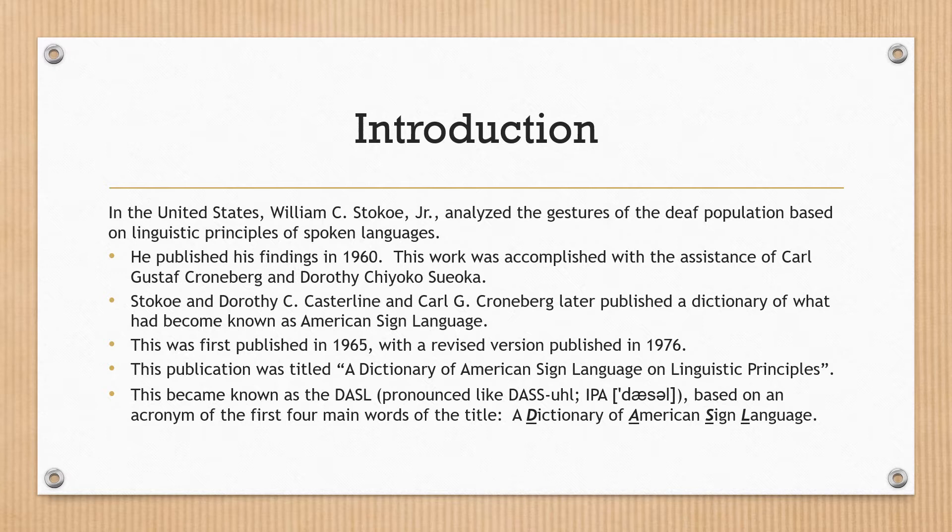This publication was titled A Dictionary of American Sign Language on Linguistic Principles, and became known as the DASL — based on an acronym of the first four main words of the title: D from Dictionary, A from American, S from Sign, L from Language.